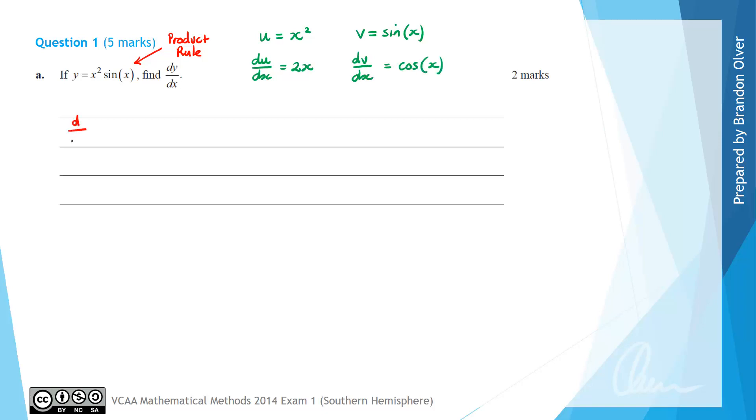Our next step is to look at the formula sheet, and we can see that the derivative d/dx of a function u times v is going to equal u times dv/dx plus v times du/dx.